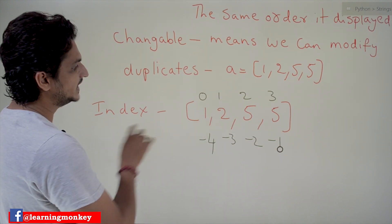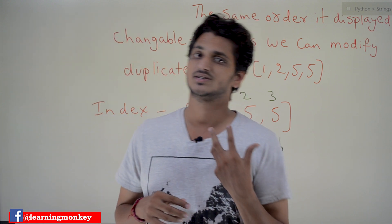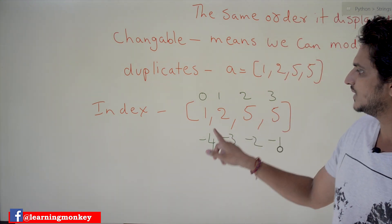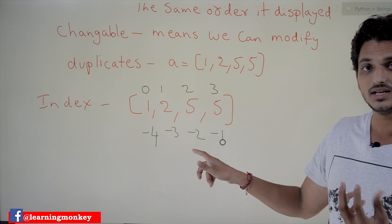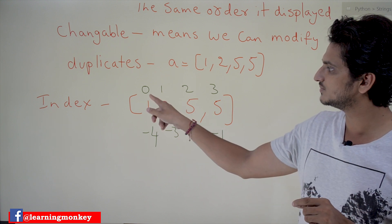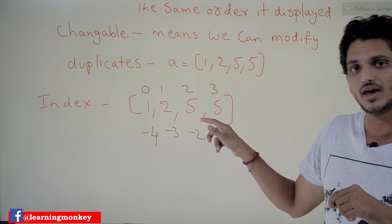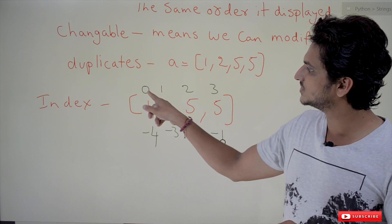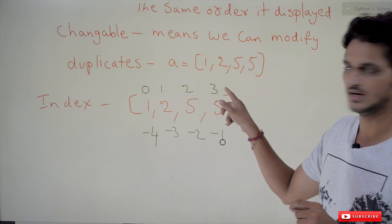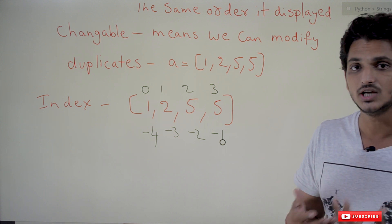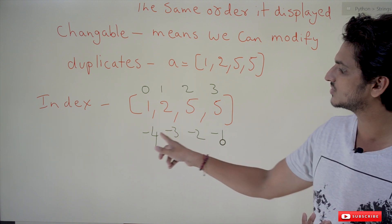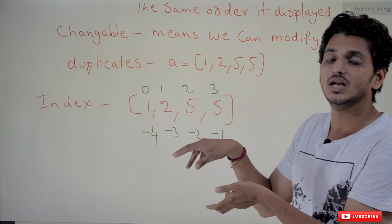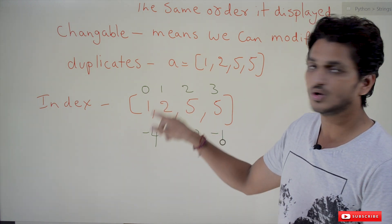List indexes — as we discussed in our previous class about strings, each character in a string is given an index starting from 0: 0, 1, 2, 3. In the same way, each element in the list is given index values starting from 0. The list also uses negative index values: -1, -2, -3, -4. If you mention -1, it will give the last element; if you mention 0, it will give the first element.